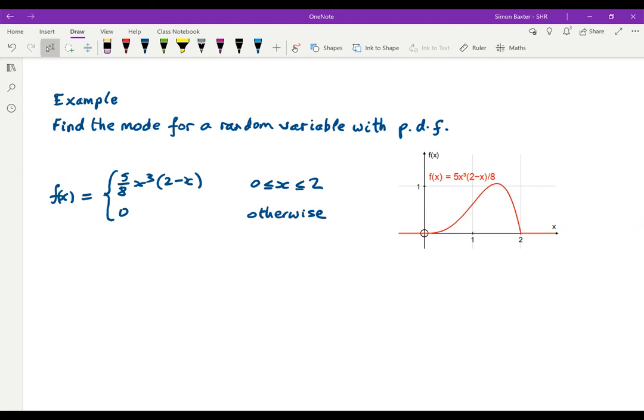So we need to differentiate. To find the mode, first differentiate: f'(x) is going to be 5/8. Differentiating 2x³ gives me 6x², and differentiating x⁴ gives me 4x³.